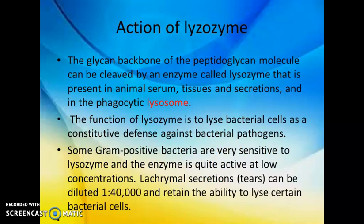Next we are going to discuss the action of lysozyme. The peptidoglycan backbone — meaning the glycan backbone composed of NAM and NAG sugars — can be cleaved by an enzyme called lysozyme. This enzyme is present in animal serum, tissues, and secretions, and also in the phagocytic lysosome, which is a cell organelle containing digestive enzymes. The function of lysozyme is to lyse bacterial cells, acting as a constitutive defense against bacterial pathogens.